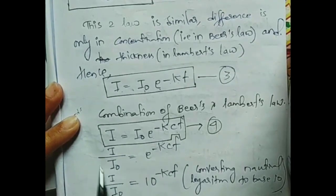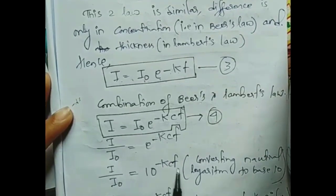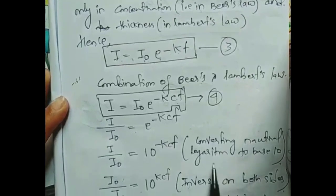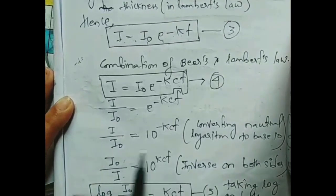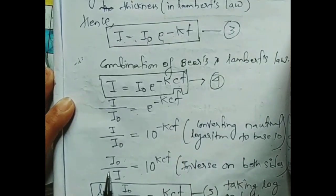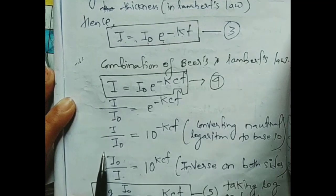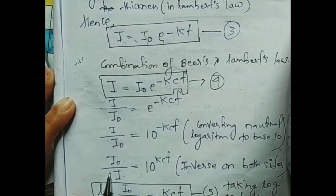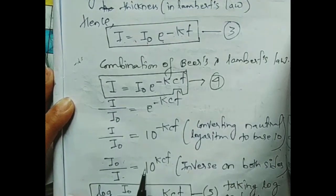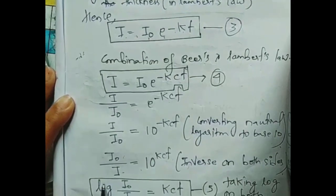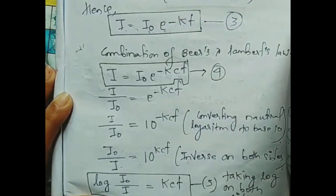Rearranging: I by I naught equals 10 to the power minus KCT — this converts the natural logarithm to base 10. Inversing the equation, I naught by I equals 10 to the power KCT. Taking log on both sides: log(I naught / I) equals KCT.